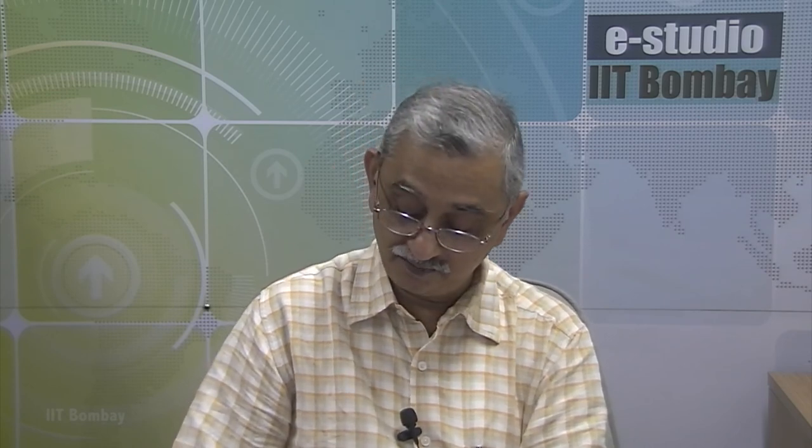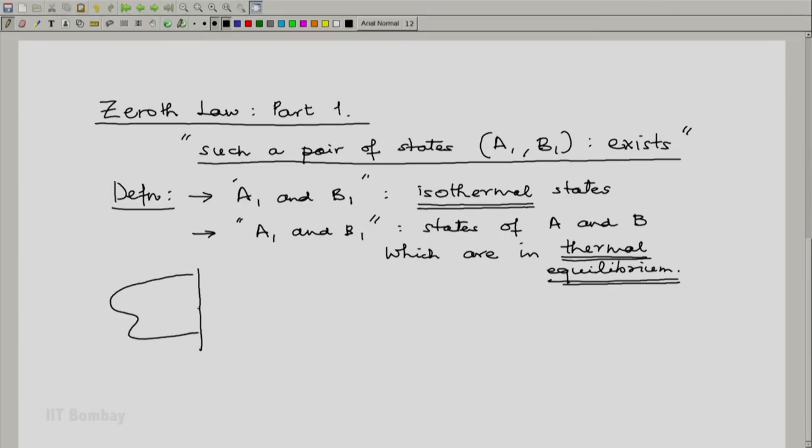It means the same thing: that if you allow system A in its state A1 and system B in its state B1 to interact across a diathermic wall, in spite of that, there will be no heat transfer. And the first part of zeroth law is the existence of such pairs of states. Thank you.